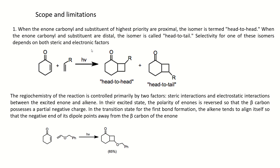In another case, if the enone and the highest-priority substituent are in a distal fashion, then the isomer formed will be head-to-tail. These different types of isomers can be expected, and their selectivity depends upon steric and electronic factors. For example, in the second case, the alkene has a bulky group like a phenyl group attached to the double-bonded carbon, and steric interaction will be a major factor deciding the product formation.